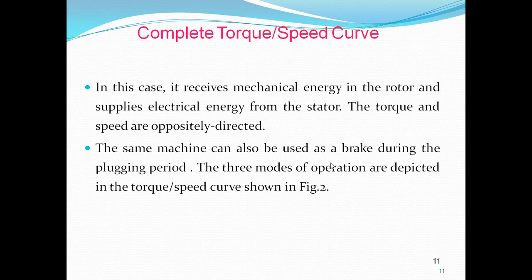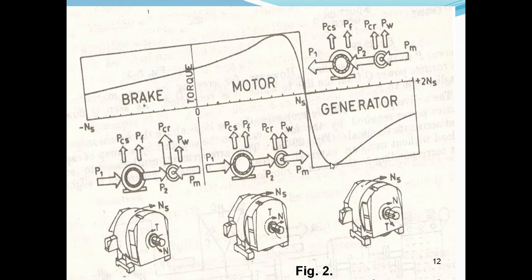The same machine can also be used as a brake during the plugging period. The three modes of operation are shown in the torque-slip curve figure. From synchronous speed to full load torque it works as a motor; after the breakdown torque it enters the breakdown region.